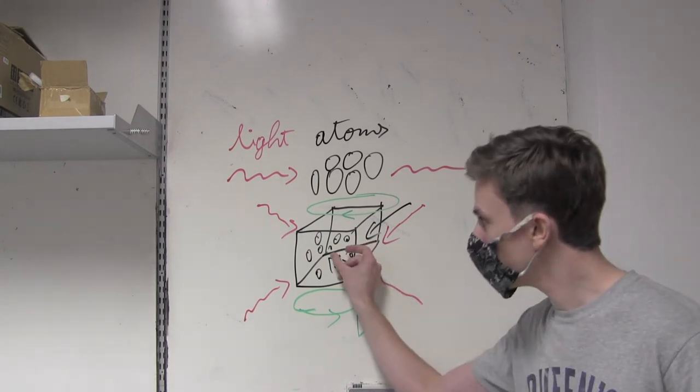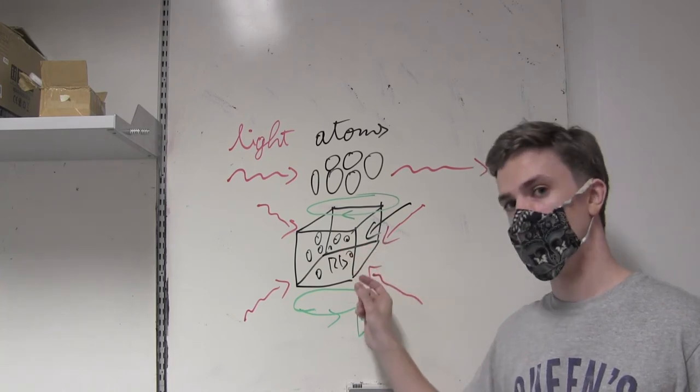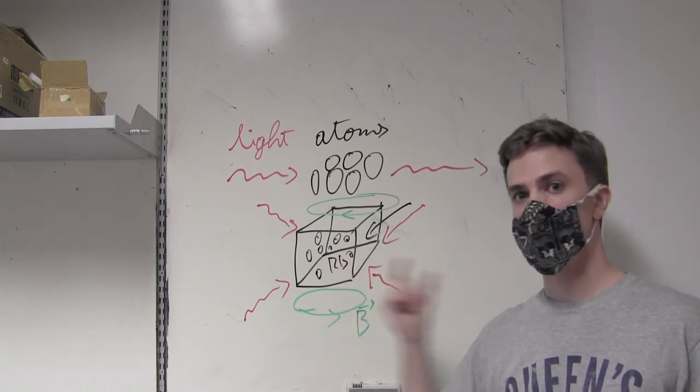So you can see the really small red dot in the center of the frame, in the center of the cuvette, is actually rubidium atoms that you can see with the naked eye.